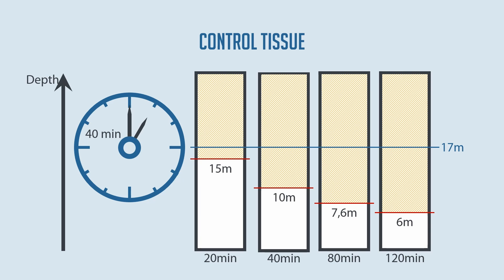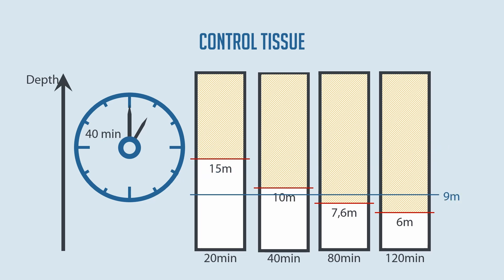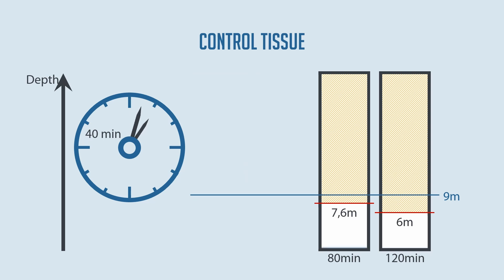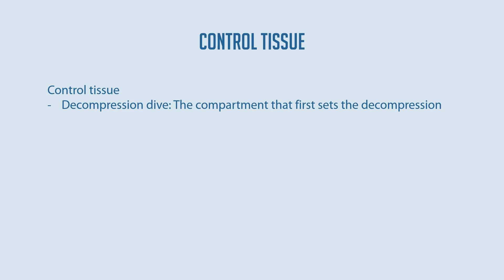Let's take a look at the second dive — this time shallower, at 9 meters, but also 40 minutes long for a better comparison. We can see that the 20 and 40-minute compartments no longer need to be taken into account, as the M-values are above the ambient pressure. The behavior of the 80 and 120-minute compartments remains unchanged. In this context we often speak of a so-called control tissue: in a decompression dive the control tissue is the one that first specifies a decompression stop.